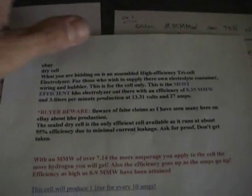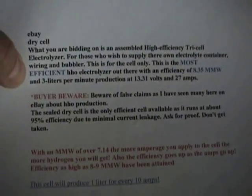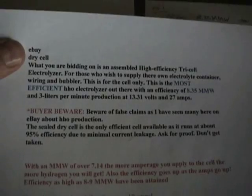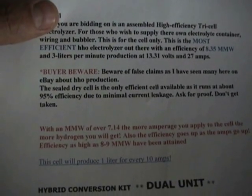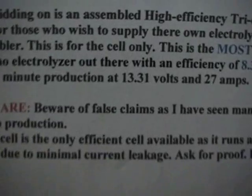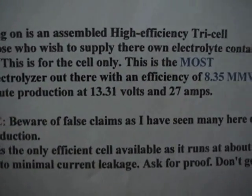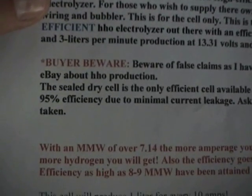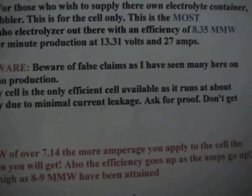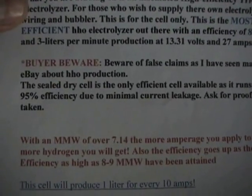So what I've done is taken a couple of examples of some things I've seen on this auction site, and I wanted to go through the numbers that come up when plugging in what they are posting on these ads. The first one has a dry cell, and he says he's getting 3 liters per minute production at 13.31 volts and 27 amps. Further down in his ad he says, 'Beware of false claims about production,' and he's claiming his dry cell is 95% efficient.